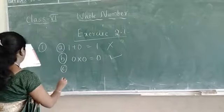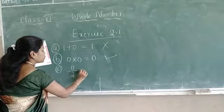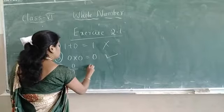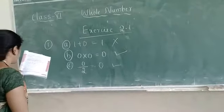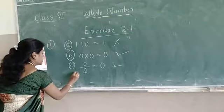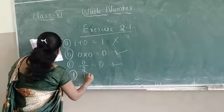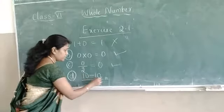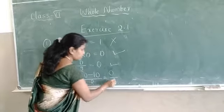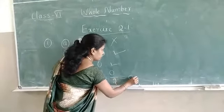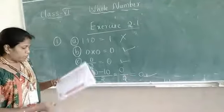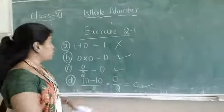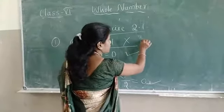Next: C — 0 divided by 2, you get answer 0. Yes. Next, D: 10 minus 10 equals 0, divided by 2 equals 0 — this represents 0. So for the first question, which of the following will not represent 0? The first one — 1 plus 0 — does not represent 0.